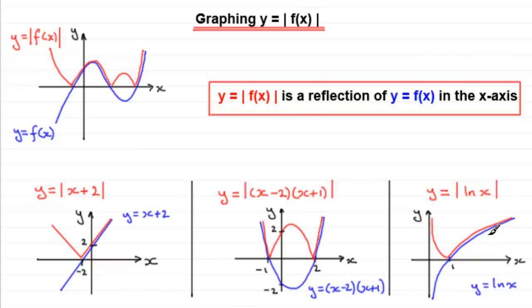I hope these examples help you use this method going forward. To graph y equals the mod of f(x): first draw the normal graph y equals f(x), then reflect any parts of the graph that are below the x-axis in the x-axis.